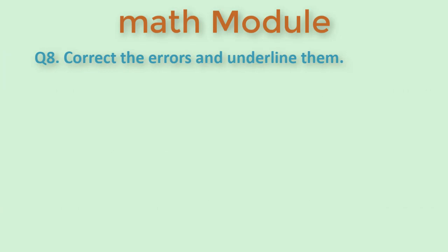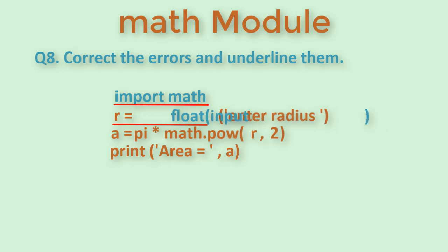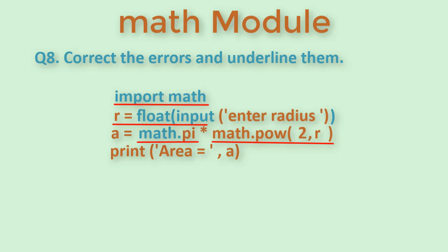Another type of question could be to correct the errors and underline them. For example, take a look at this program. Here the first error is that math library is not included, so you will include that. Then r is numeric so you will use typecasting to convert the input to either float or int. Then pi needs to be qualified as math.pi. Also, parameters are written in wrong order in power function. We first give r and then give it to the power of 2.